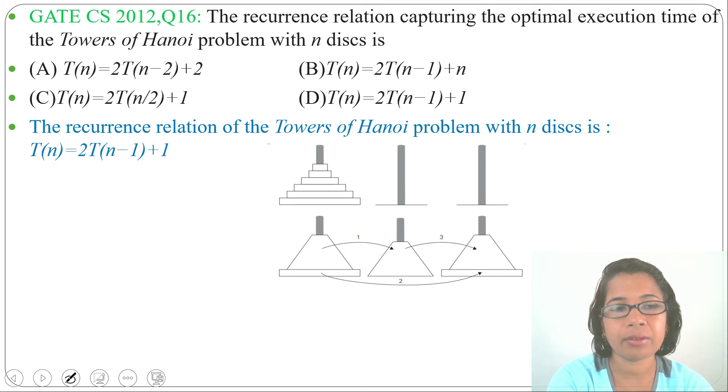Option A: T(n) = 2T(n-2) + 2, this is wrong. Option B: T(n) = 2T(n-1) + n, this is wrong due to this n.